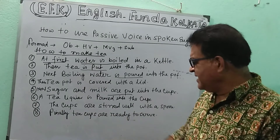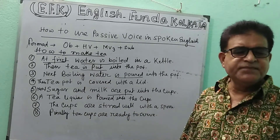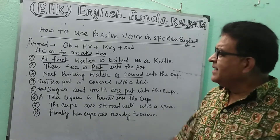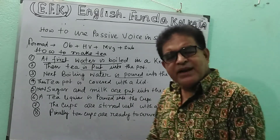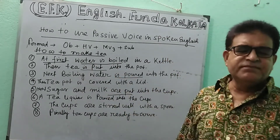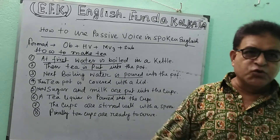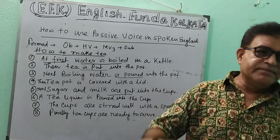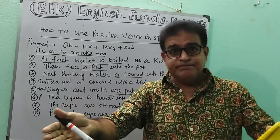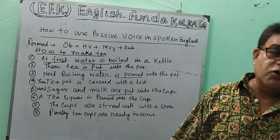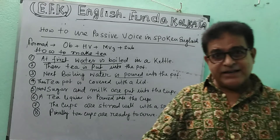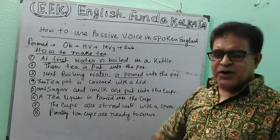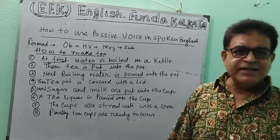Finally, the tea cups are ready. You can use this same method to describe how to make a building, how to make bread, or how to prepare rice. So passive voice is very important for both spoken and written English.